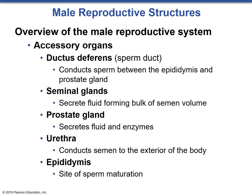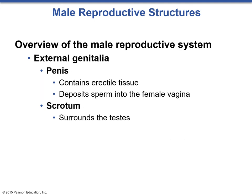The seminal glands secrete a fluid that forms the bulk of semen volume. The prostate gland secretes fluid with different enzymes that help activate the sperm. The urethra follows the ductus deferens and conducts semen to the exterior of the body; it can also conduct urine in males. The epididymis is attached to the testes and is the site of sperm maturation. The penis contains erectile tissue and deposits sperm into the female vagina. The scrotum is a combination of muscle and skin tissue that surrounds the testes, protecting them and helping to regulate temperature.